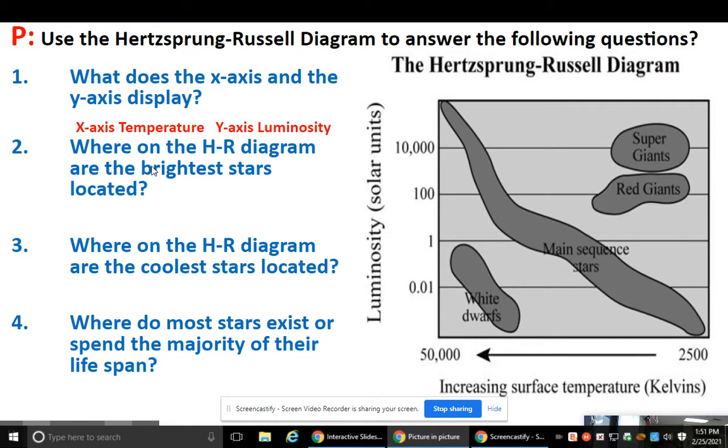Where on the HR diagram are the brightest stars located? So if brightness increases from bottom to the top or luminosity, remember brightness and luminosity are the same terms. So if brightness increases from bottom to top your brightest stars are up here at 10,000. So that would be the top part of your main sequence and some of your super giants.